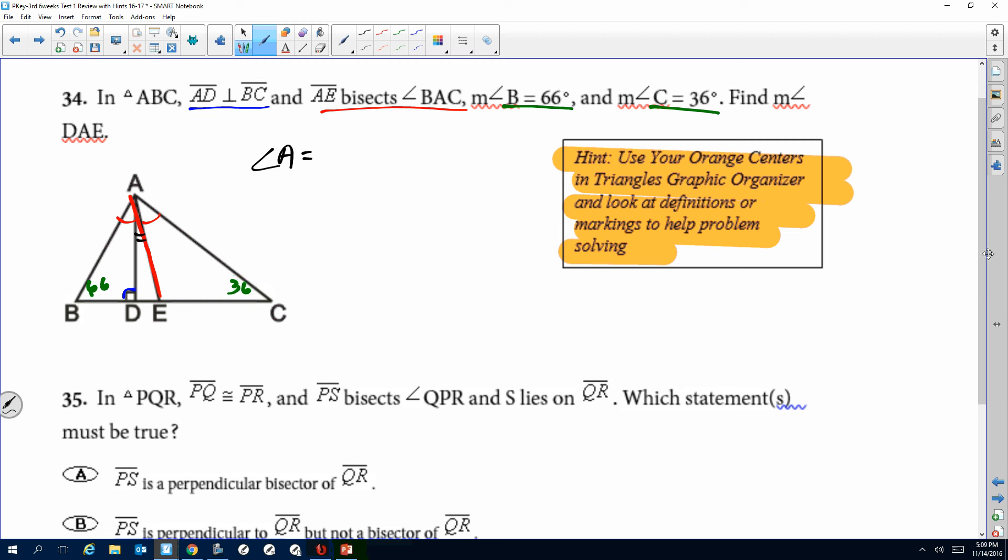Minus our two angles here would be 102, so 66 and 36. So angle A is 78. Now we are going to divide that angle A because it's being bisected, so I'm going to divide that by two.